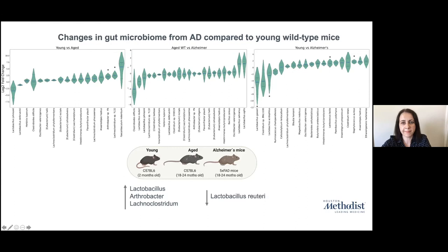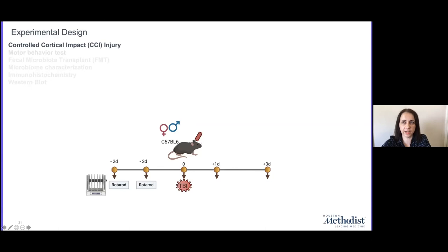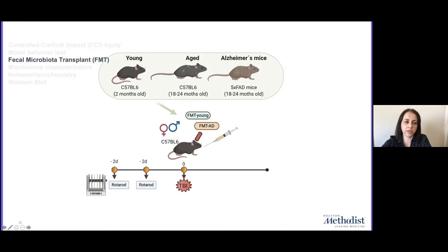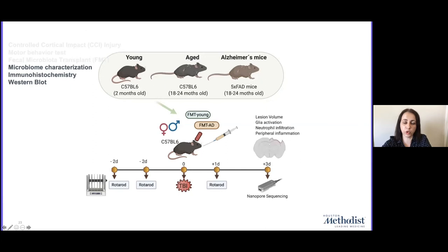We performed different experiments and carried out the following experiment: we induced a traumatic brain injury into the cortex of these animals to induce inflammation. Then we performed treatment with fecal microbiota transplants from control young healthy mice and from animals with Alzheimer's disease, administered orally after the animals suffered injury. We analyzed different pathologies, neuroinflammation, and lesion volume in the brain, and also performed behavioral and motor testing. The animals were transplanted with fecal matter transplants and underwent nanopore sequencing.